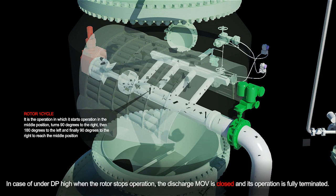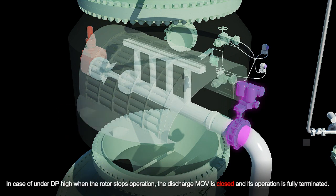In case of under DP high when the rotor stops operation, the discharge MOV is closed and its operation is fully terminated.